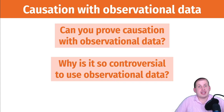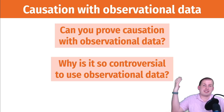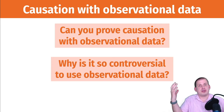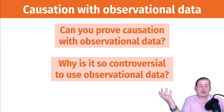Often you can't run these experiments. It might be unethical to roll out a new social policy to only some people for the sake of science. So instead we want to use observational data because it exists and it's really tempting to just use it. As long as you do things correctly — don't infer causation based on correlation alone, but use the language of causal models — you can legally talk about causation using observational data.